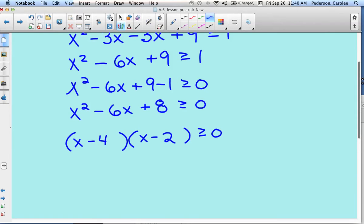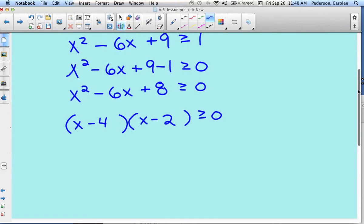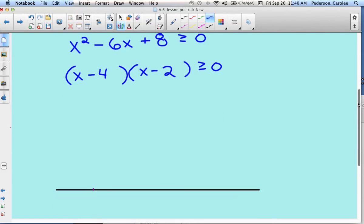Then we set our factors equal to 0 and solve for x. So x minus 4 equals 0, x minus 2 equals 0. Add 4 to both sides, add 2 to both sides. These two are called our critical points at 4 and 2.